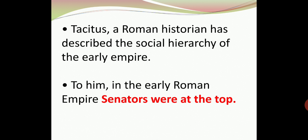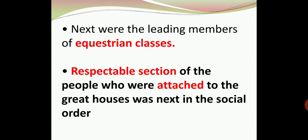Tacitus described the leading social group of the early empire as follows in terms of social hierarchy. To him, in the early Roman empire, senators were at the top of the social hierarchy — the great houses, the noble families at the top of the social order.